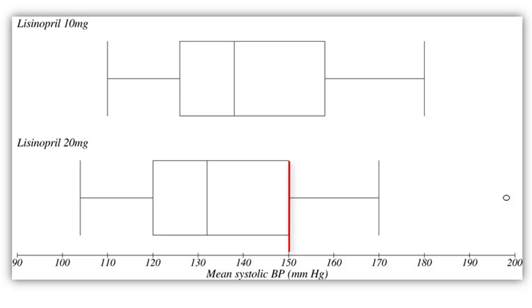The right side of the box is the upper quartile, which equates to the 75th centile. 75% of the data will be lower than this number.